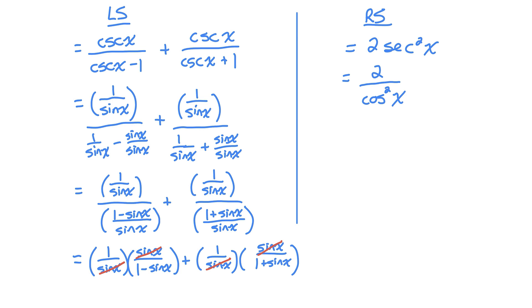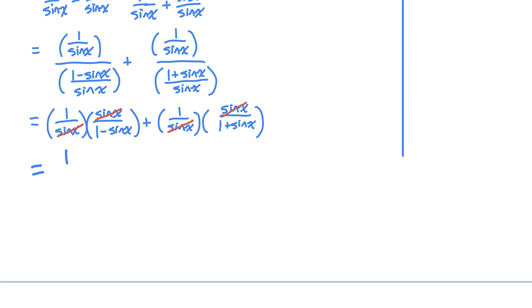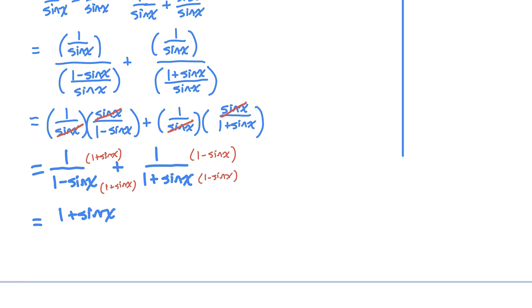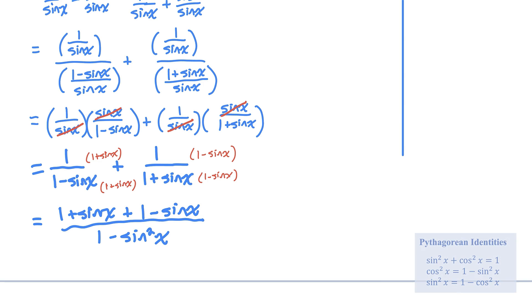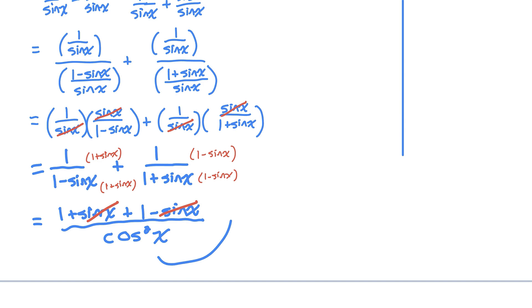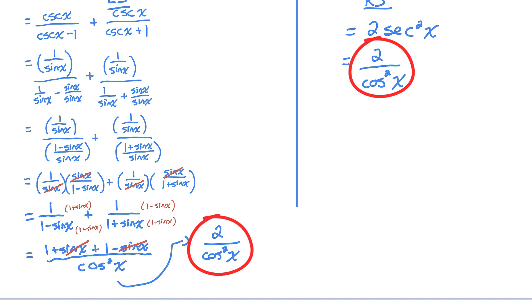I have 1 over (1 minus sine x) plus 1 over (1 plus sine x). Getting a common denominator, the numerator becomes 1 plus sine x plus 1 minus sine x, and the denominator is (1 minus sine)(1 plus sine), which is a difference of squares — 1 minus sine squared — which equals cosine squared. In the numerator, the sine terms cancel out, leaving 1 plus 1 equals 2. So I'm left with 2 over cosine squared x, which is the same as the right side of the equation — the identity is proven.